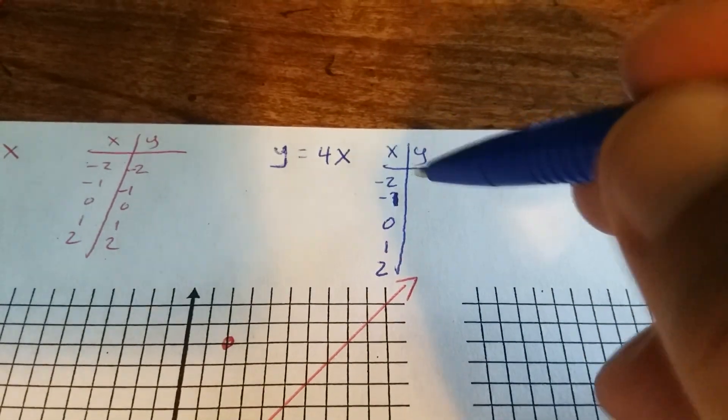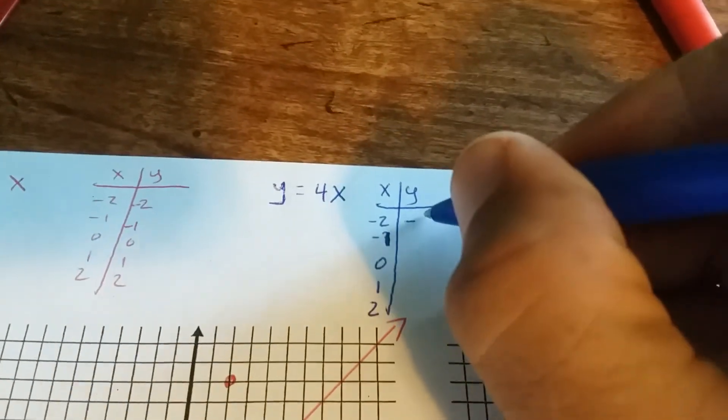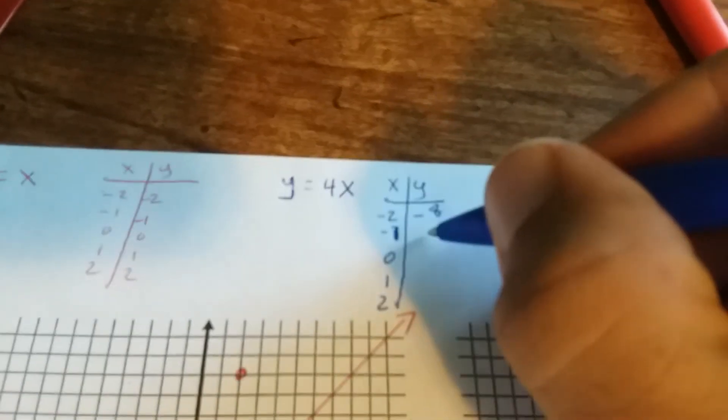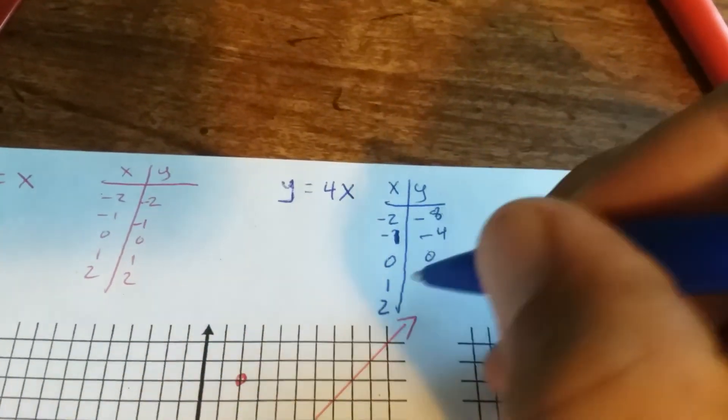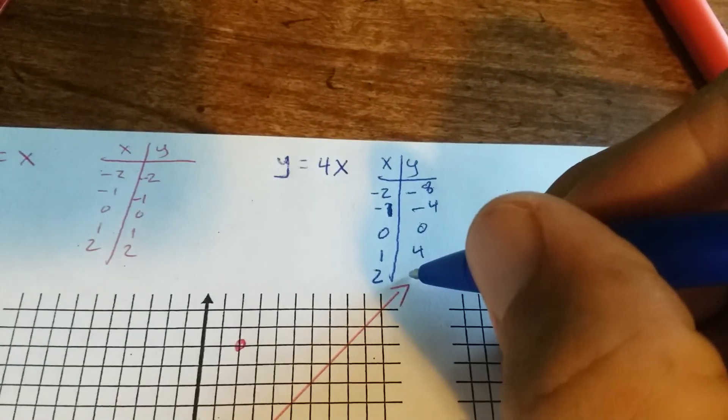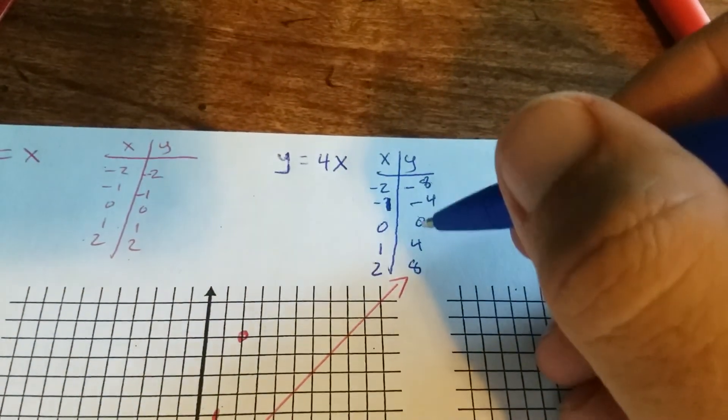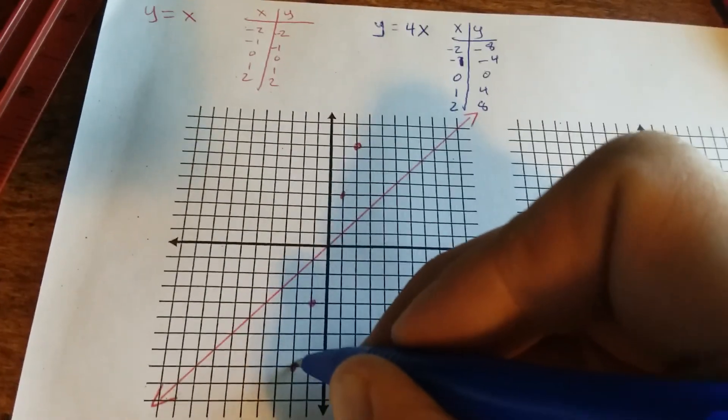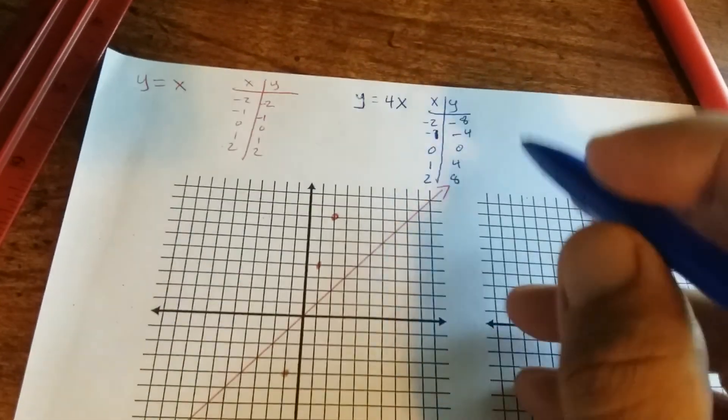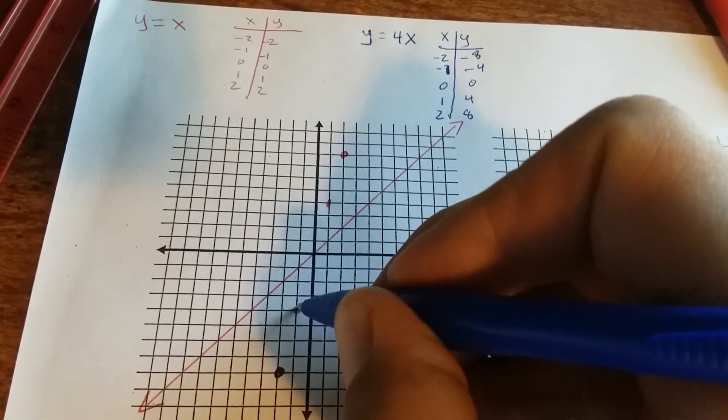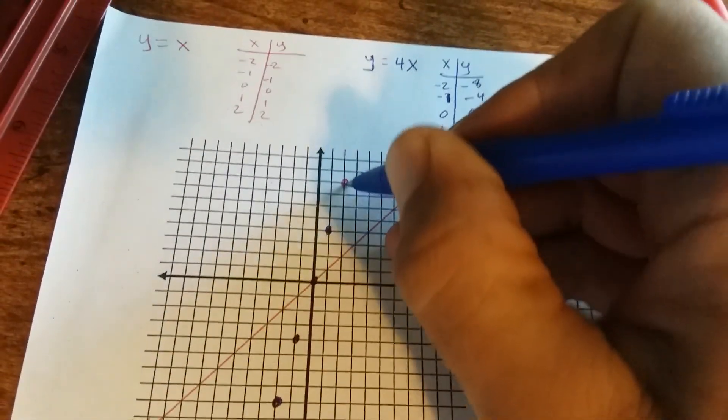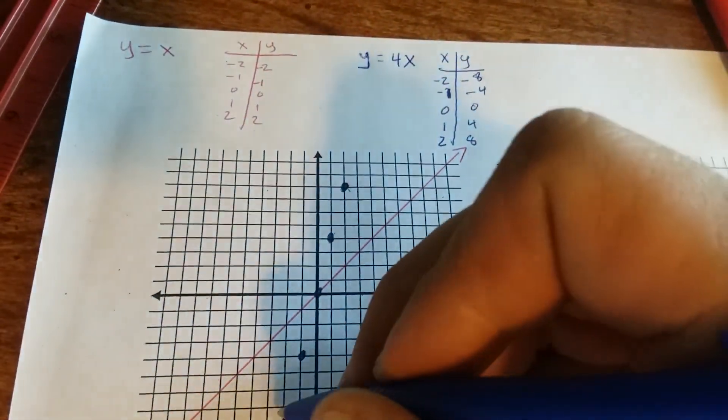So y equals 4x, so that means y is 4 times negative 2 is negative 8. 4 times negative 1 is negative 4. 4 times 0 is 0. 1 times 4 is 4. And 4 times 2 is 8. So we can plot these points and then compare the graphs. So we have negative 2, negative 8 is right here. Negative 1, negative 4 is here. 0, 0, 1, 4, and 2, 8.